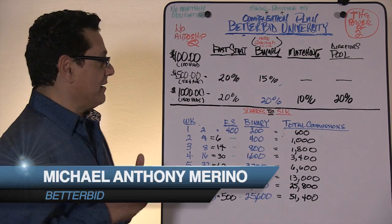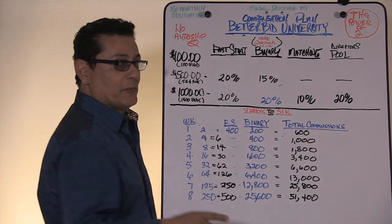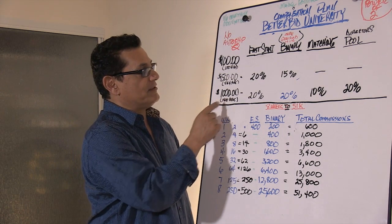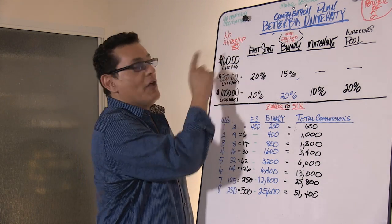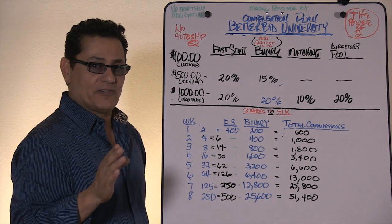This segment is called 8 Weeks to 51K because we're going to talk about the director position, the $1,000 position with an annual fee of $95. You come in, this position has no auto ship. None of the entry positions has an auto ship.